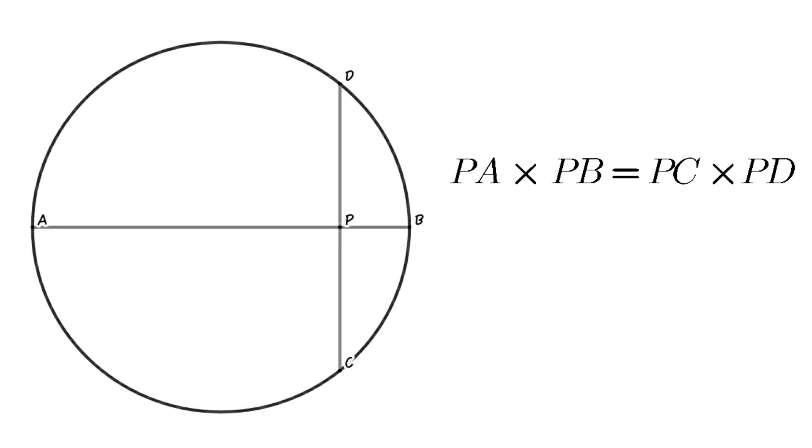We are applying the following concepts to solve this problem. In a circle, PA × PB = PC × PD. If AB is the diameter of a circle and CD is perpendicular to AB, then PA × PB = PD².